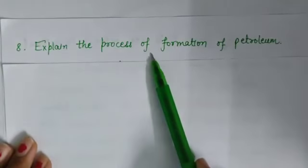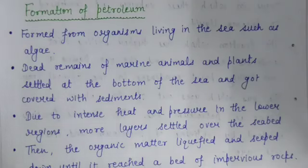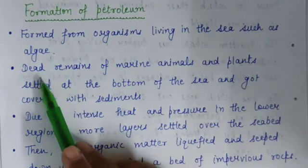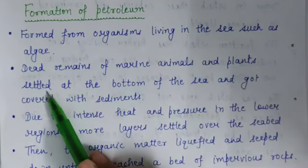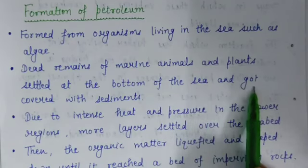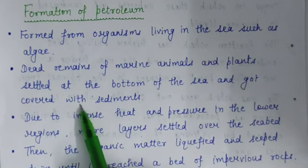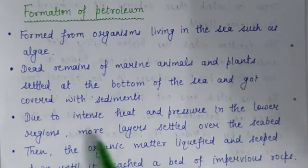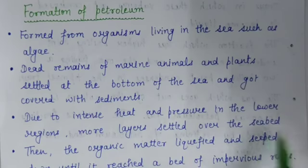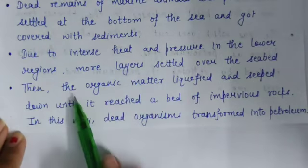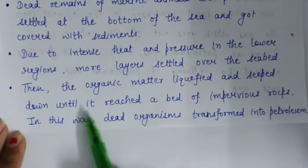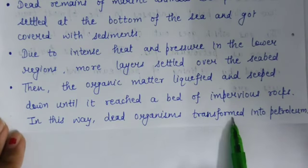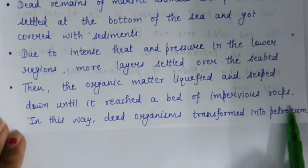Question number 8: explain the process of formation of petroleum. Petroleum was formed from organisms living in the sea such as algae. Dead remains of marine animals and plants settled at the bottom of the sea and got covered with layers of sand and clay. Due to intense heat and pressure in the lower regions, the organic matter liquefied and seeped down until it reached a bed of impervious rocks. In this way, dead organisms transformed into petroleum.